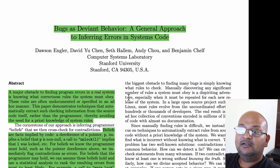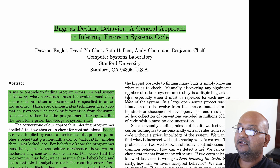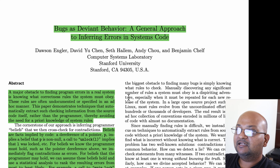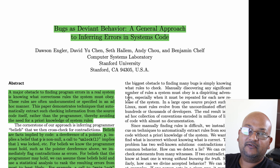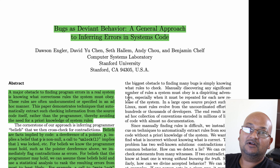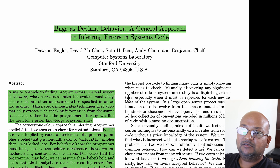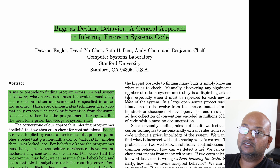Hi folks, welcome back. Today I come to you with a paper that talks about how to automatically detect bugs in system code by treating them as deviant behavior — behavior that's out of the norm from all the code around it. This work was done by Dawson Engler and his group at Stanford and was published back in 2001 in the Symposium of Operating System Principles.